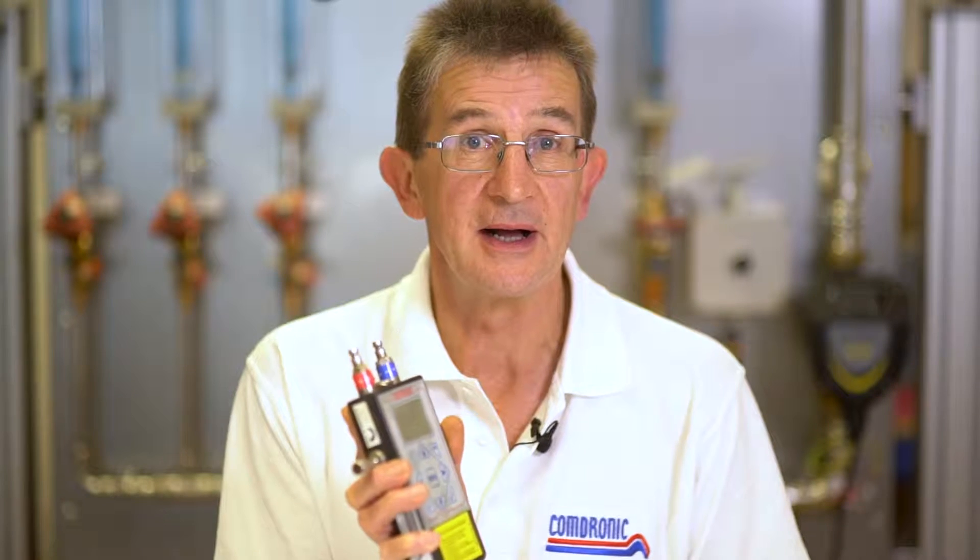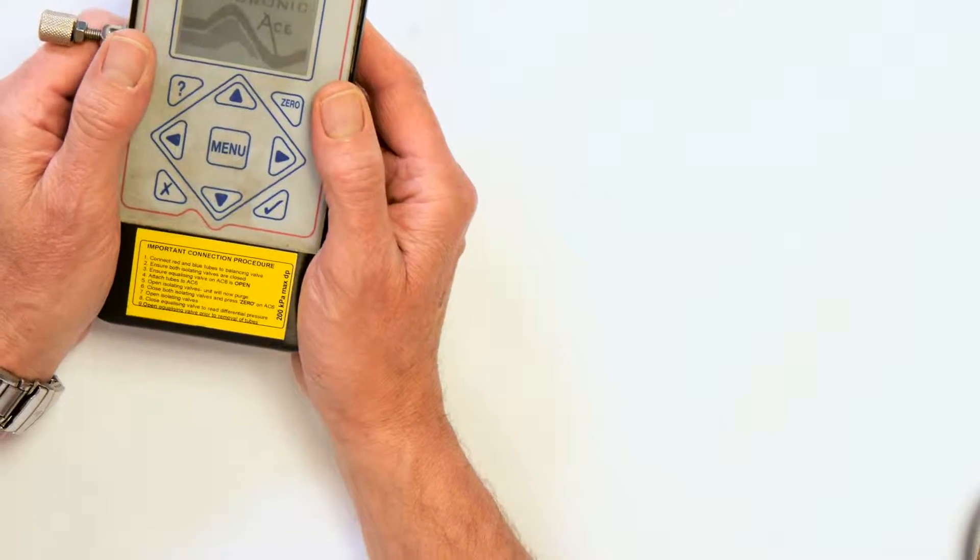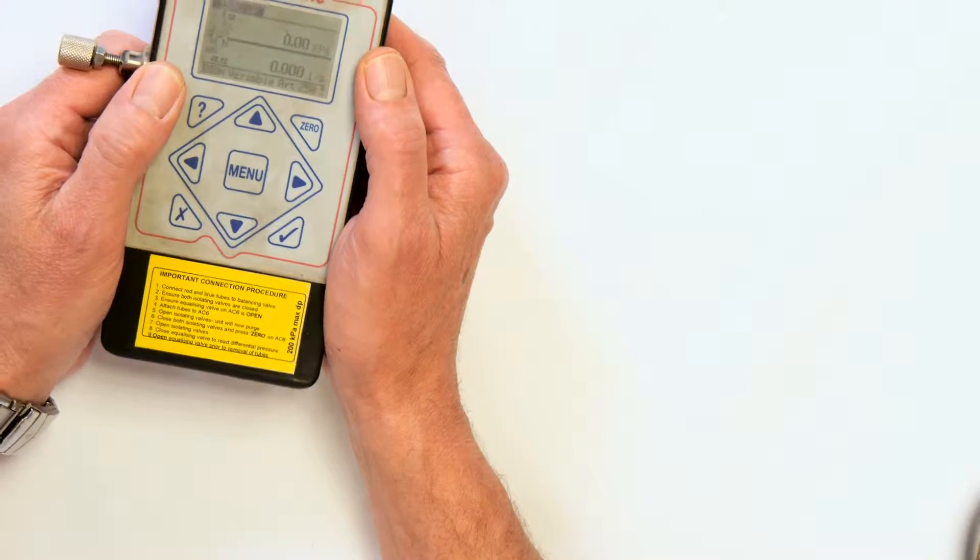The unit comes to us, we will initially do an initial inspection of the unit where we'll first of all remove the battery cover, make sure there's a battery that works in the unit and then make sure the unit turns on, the back lights are working on the screen, the screen is displaying properly, that the buttons are actually working and that all the menus are available.